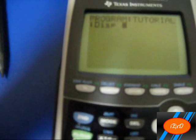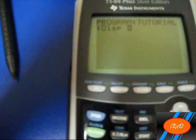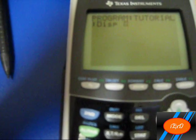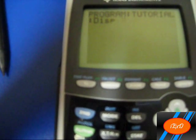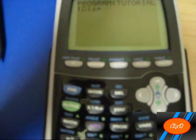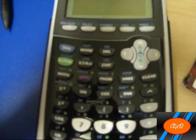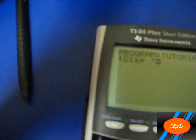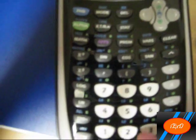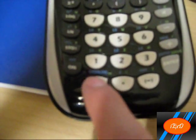Whenever you want to do some kind of message, you would click Second Alpha for A-lock, so you don't have to click it over and over again. First you would click the quotation mark, which is the plus button, and then you type in your message. For the space bar, you would click the zero, and make sure it's in Alpha mode.